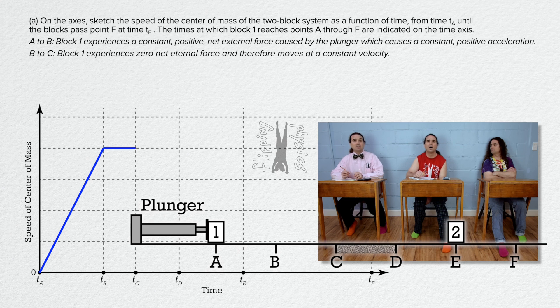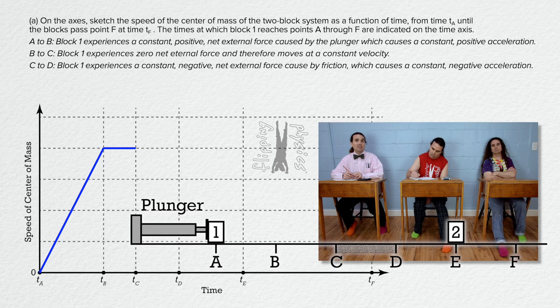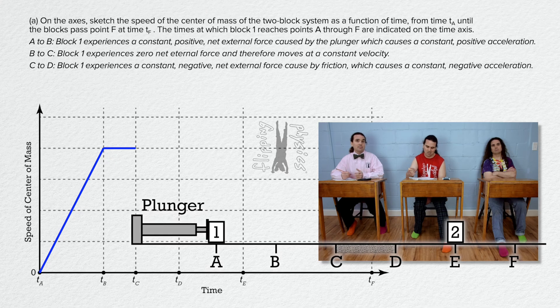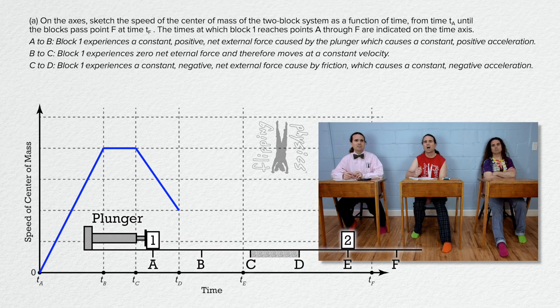From C to D, block 1 experiences a constant negative net external force caused by the friction between the block and the rough surface which causes a constant negative acceleration. From time C to time D, starting where the previous line ended, draw a line with a constant negative slope.